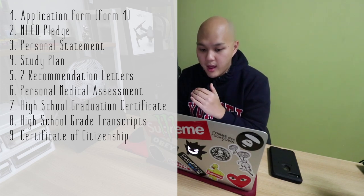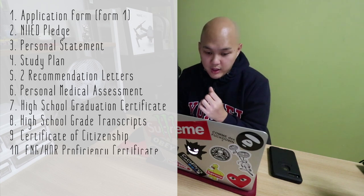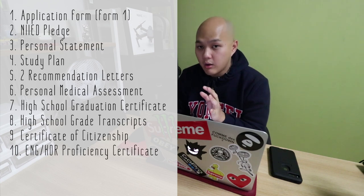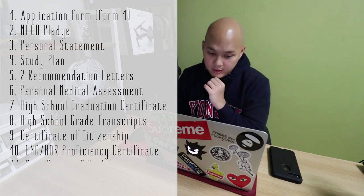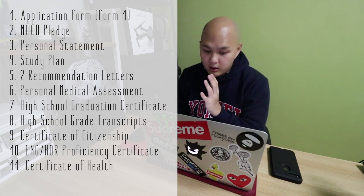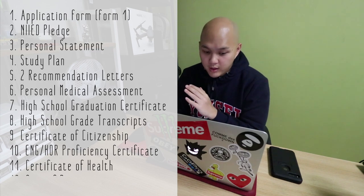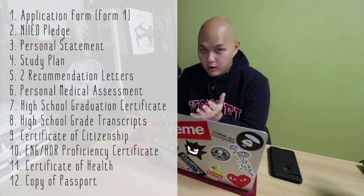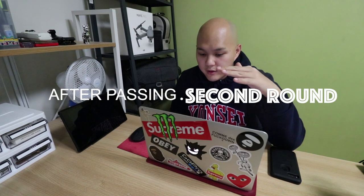Number seven is your graduation certificate from high school. Number eight is your high school grade transcripts. Number nine is certificates of your citizenship and your parents' as well. Number ten is a certificate of Korean or English proficiency, if applicable. Number eleven is a certificate of health authorized by a medical doctor. Number twelve is one copy of your passport.